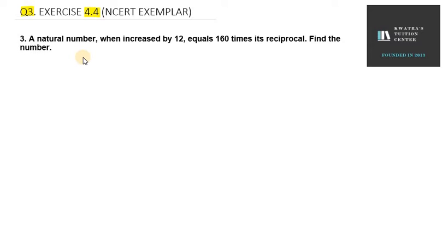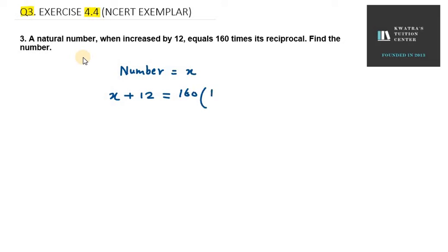Hello everyone, let's start with question number 3 of exercise 4.4. It says a natural number when increased by 12 equals 160 times its reciprocal. Find the number. I will take the number as x. Now, it says a natural number when increased by 12, so that means x plus 12 equals 160 times its reciprocal, that is 1 over x.